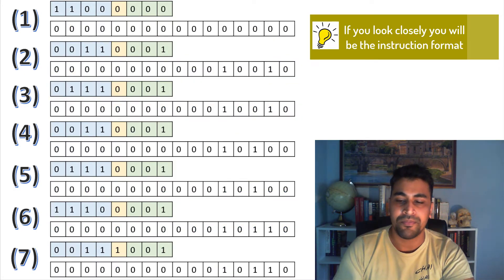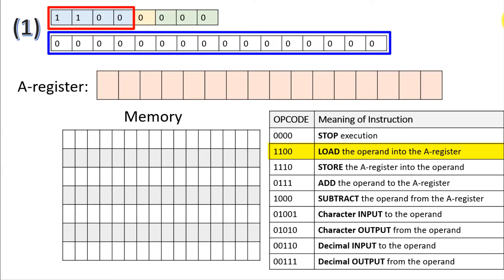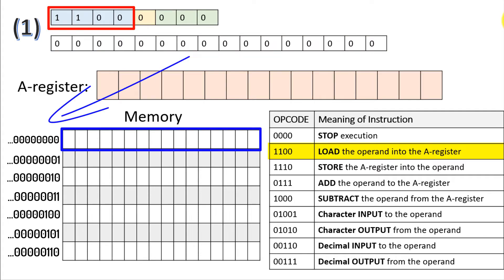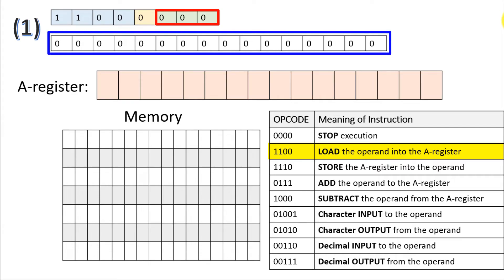Let's try to execute this program. In the first instruction, the instruction specifier has 1100000. The 1100 indicates the load operation — load the operand into the A register. Looking at the addressing mode specifier, 000, we know that what we want to load into the A register is exactly the operand. So we load the operand into the A register.